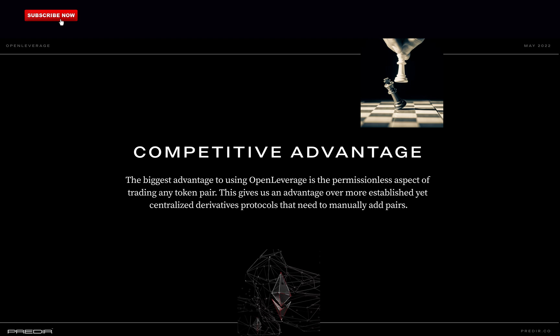The biggest competitive advantage of Open Leverage is the permissionless aspect of trading any token pair, giving them an edge over more established yet centralized derivatives protocols that need to manually add pairs. Open Leverage also turns practically any token into a yield-generating asset through trader borrowing demand — this yield is organic and does not rely on liquidity mining or rewards. They also generously reward users by allocating 4–6.6% of trading fees to top trading partners and referrers via their Invitation League campaign.